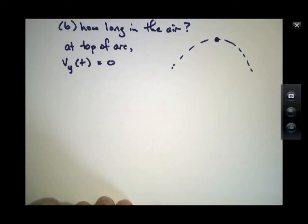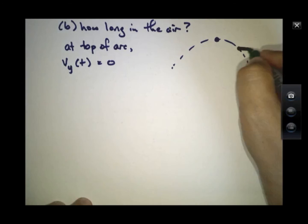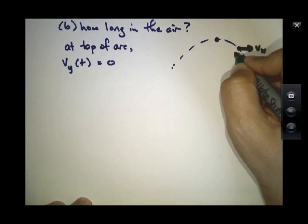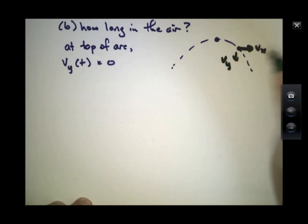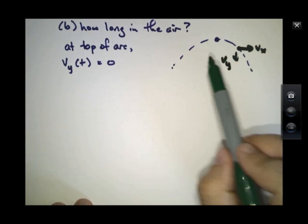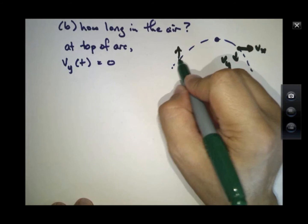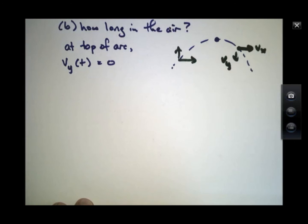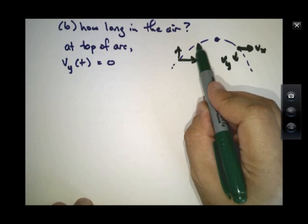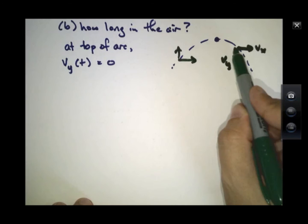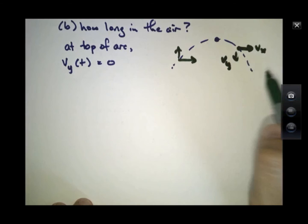Remember, the speed is constantly changing in the y direction. This is Vx. This is Vy. Initially, Vy is positive, and Vx is up to the side like that. And Vy is shrinking as we go up the arc, and then eventually getting bigger and bigger as we go down the arc again, but in the opposite direction.